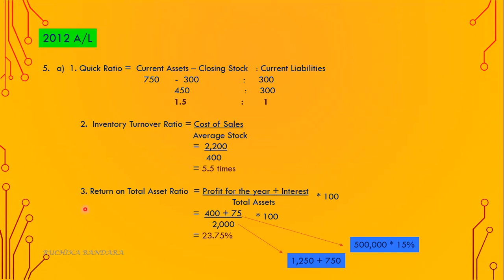Number three: return on total assets ratio equals profit for the year plus interest, divided by total assets, into 100. Profit for the year is 400. Interest: the debenture is 500,000 at 15%, giving interest of 75,000. Total assets are non-current assets of 1,250 plus current assets of 750, equaling 2,000. The answer is 23.75%.